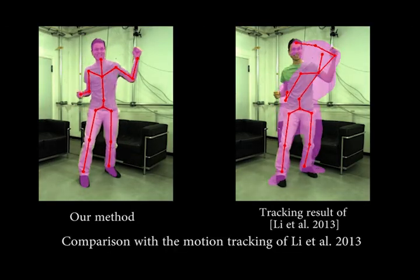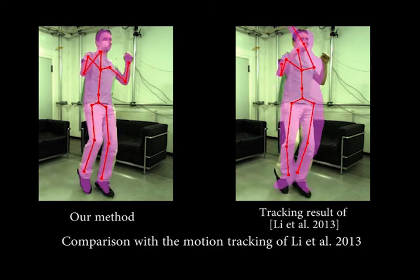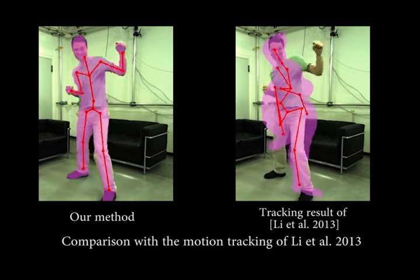The second comparison shows how a recent tracker fails on the same challenging dataset, while our method estimates the correct pose.